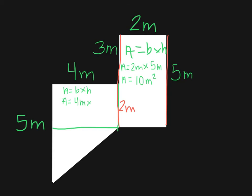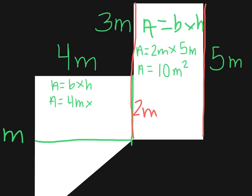2 meters plus 3 meters gives us 5 meters. So we're back in the game. Finished up. 4 meters times 2 meters is 8 meters squared.